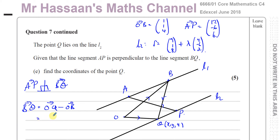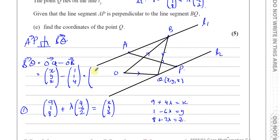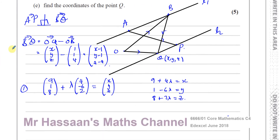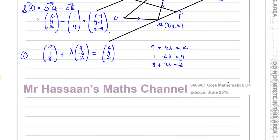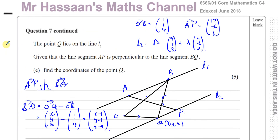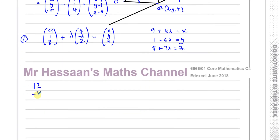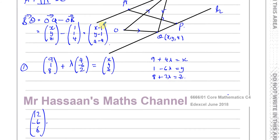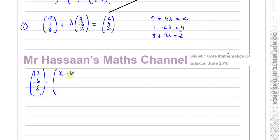Since AP is perpendicular to BQ, their dot product equals zero. AP is the vector (12, -6, 6), and BQ is (X-1, Y-1, Z-4). So the dot product gives: 12(X-1) - 6(Y-1) + 6(Z-4) = 0. From this we can form an equation by combining with the three parametric equations.